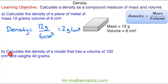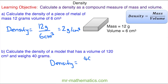In question b, calculate the density of a model that has a volume of 120 centimeters cubed and weighs 40 grams. Using our formula, density equals 40 grams divided by 120 centimeters cubed. 40 divided by 120 is one third, or 0.3 recurring, and the units are grams per centimeter cubed.